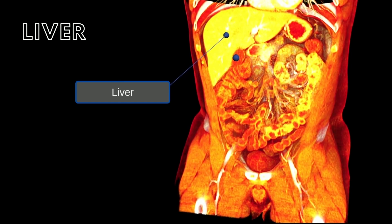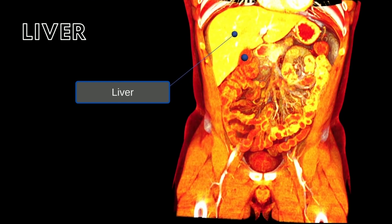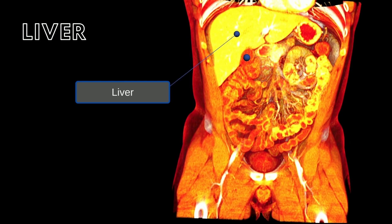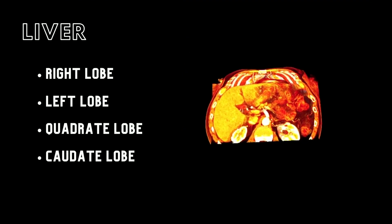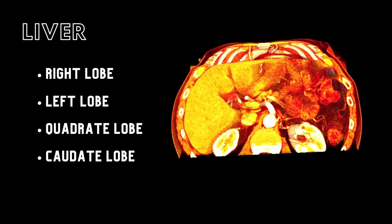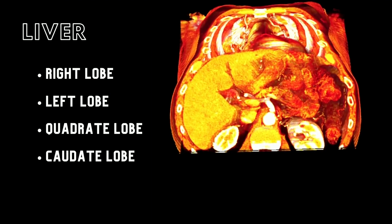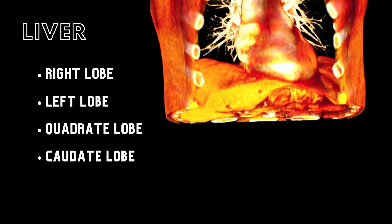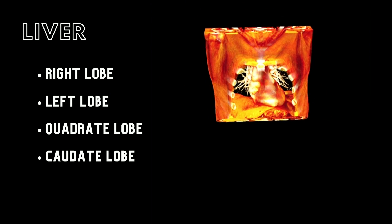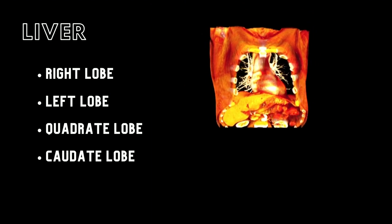The liver is divided into two primary lobes: a larger right lobe and a smaller left lobe. The large right lobe can be further divided into an inferior quadrate lobe and a posterior caudate lobe.